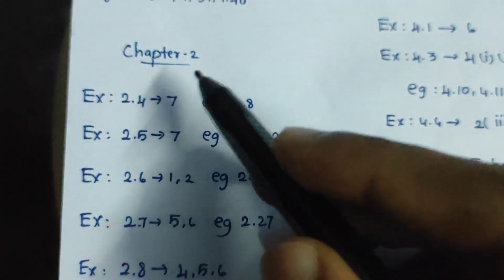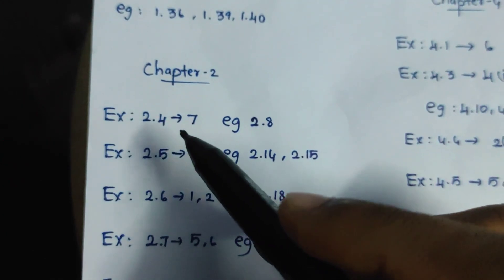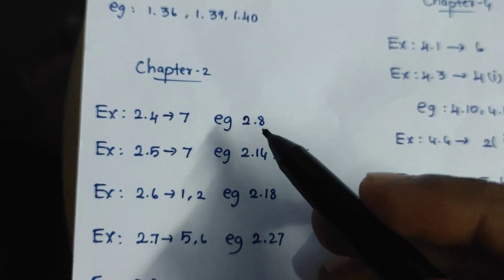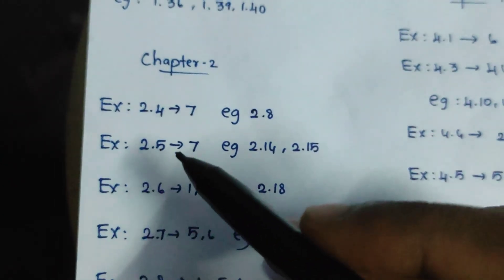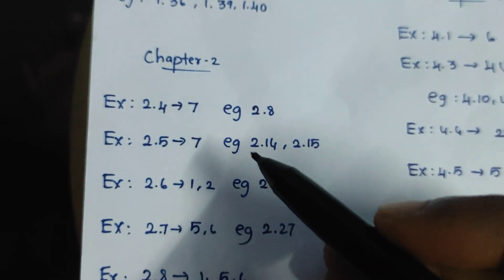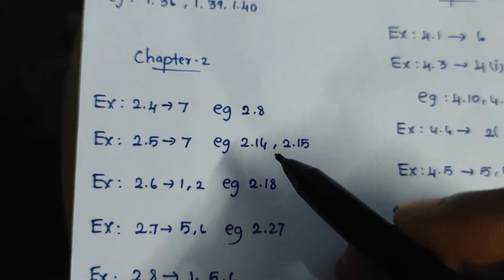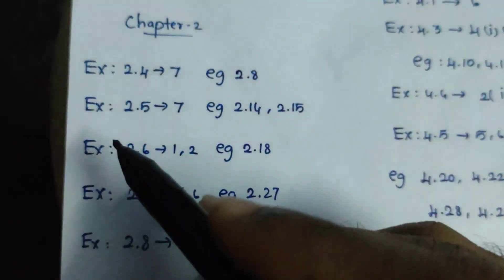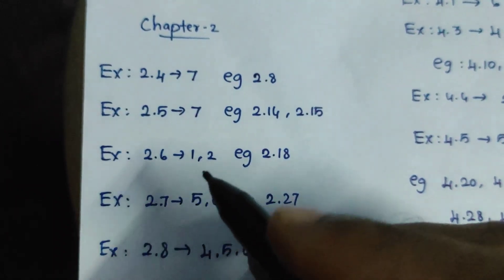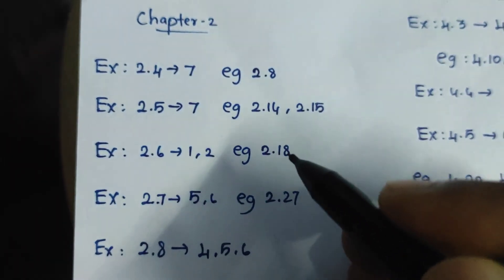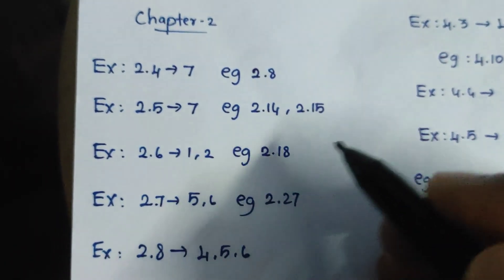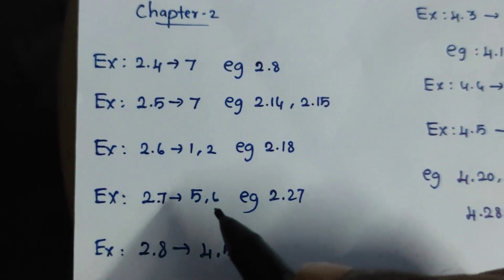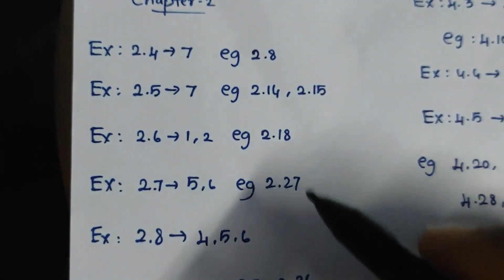Chapter 2. Exercise 2.4, 7th sum, Example 2.8. Exercise 2.5, 7th sum, Example 2.14, 15. So let's read a reference. Exercise 2.6, first sum, second sum. Example 2.18. Exercise 2.7, 5th sum, 6th sum, Example 2.7.